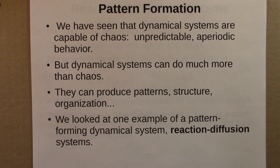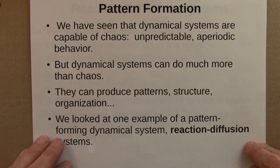And the last topic we covered in Unit 9 was pattern formation. So, we've seen throughout the course, in the first eight units, that dynamical systems are capable of chaos. That was one of the main results. Unpredictable aperiodic behavior. But there's a lot more to dynamical systems than chaos. They can produce patterns, structure, organization, complexity, and so on. And we looked at just one example of a pattern forming system. There are many, many ones to choose from. But we looked at reaction diffusion systems.